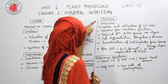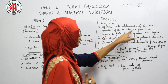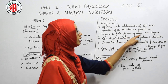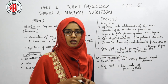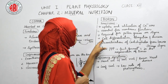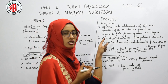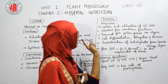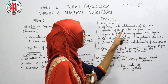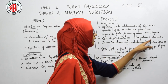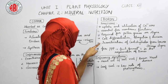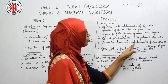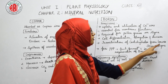Boron is also required for pollen grains to stick on the stigma. Additionally, boron is essential for major processes like cell differentiation, cell elongation, and cell division.